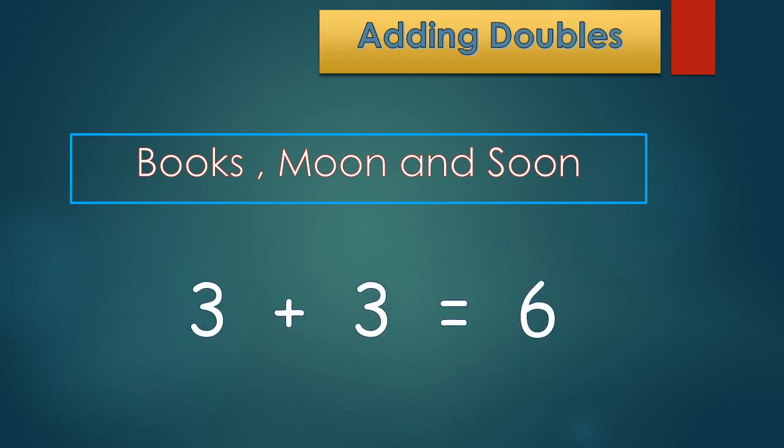See the addition sentence: 3 plus 3 equals 6. Here I added 3 two times. This is called adding doubles. When we are adding the same number two times, it is called adding doubles.